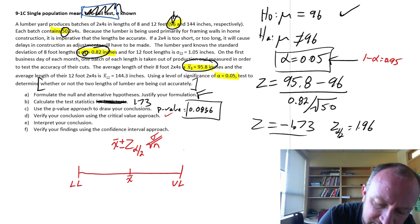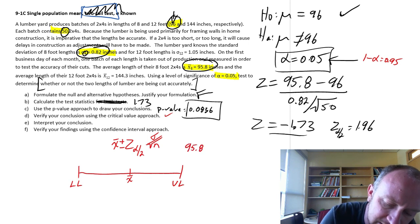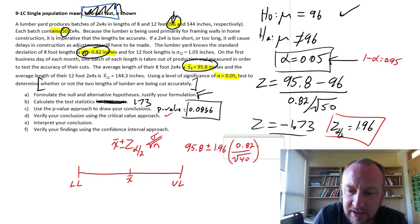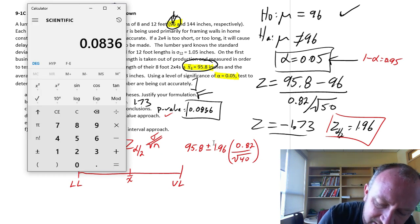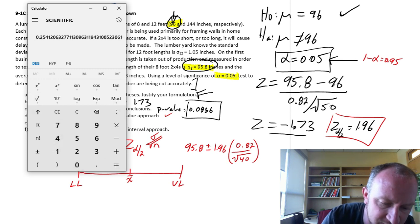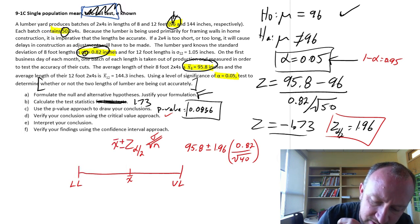So our point estimate here was 95.8 inches plus or minus this critical value we've already obtained. 1.96 times that standard error. 0.82 divided by root 40. And let's get that calculator out here. I'll just calculate the margin of error. So 1.96 times 0.82 divided by root 40 equals 0.254. So this is plus or minus 0.254.